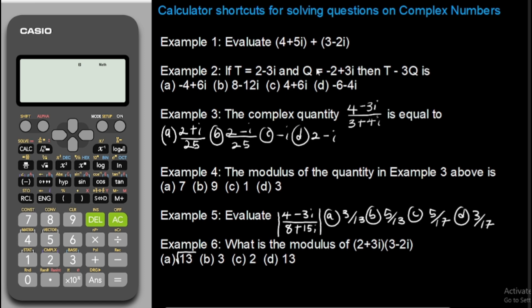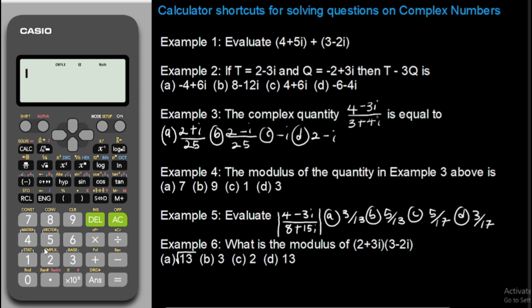In this video we'll be covering some shortcuts using our calculator. To solve questions on complex numbers, the first thing you need to do is put your calculator in complex mode. You tap on the Mode button, then press number 2 — number 2 says 'Complex'. You can also see it at the top of the number 2 key. So we've succeeded in putting our calculator in complex mode.